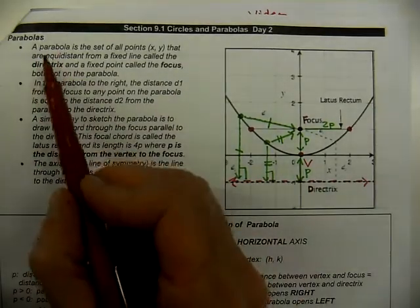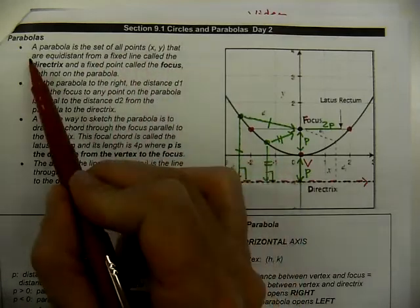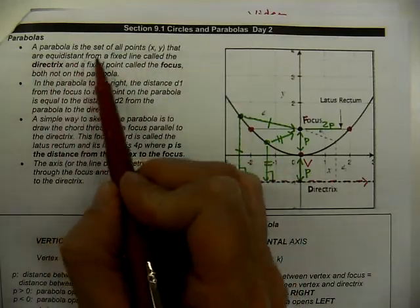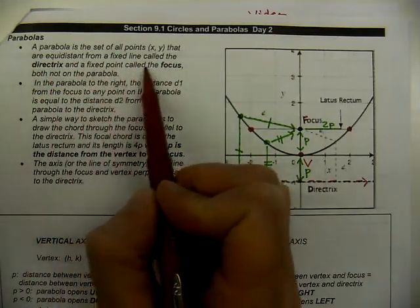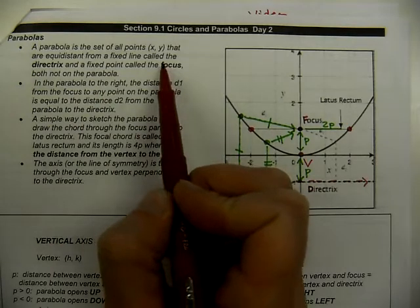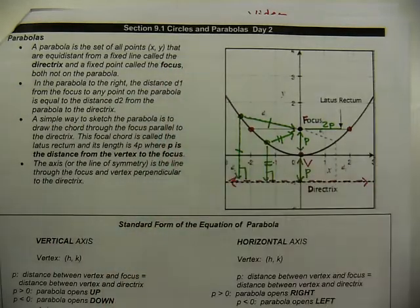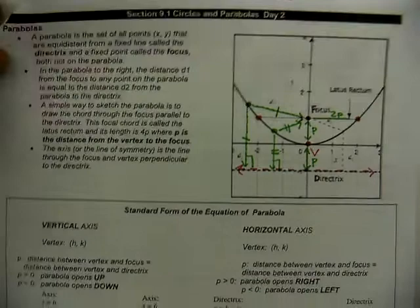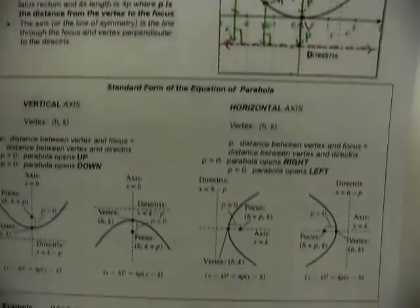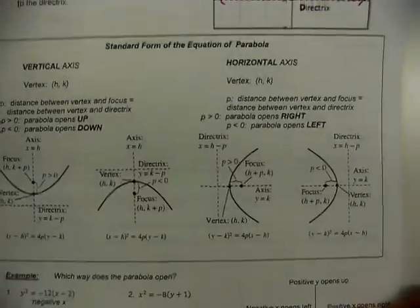So that's our definition: a parabola is the set of all points that are equidistant from a fixed line called the directrix and a fixed point called the focus. It's possible our parabola could open upside down — we've seen that before as a reflection — but it's also possible it could open to the right or to the left.